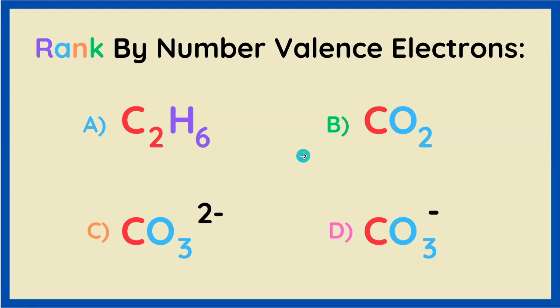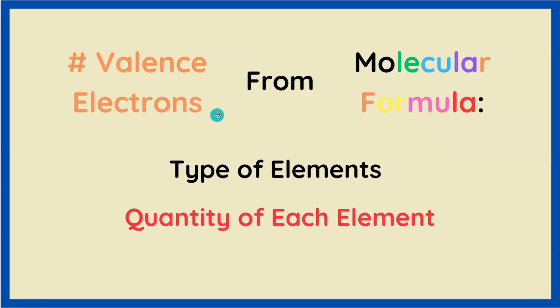Rank each of these molecules by the number of valence electrons each one has. You must be able to do this because this is one of, if not the, first step in correctly drawing a Lewis structure. So what we got to do is go from the molecular formula of the molecule to figure out how many valence electrons we have.